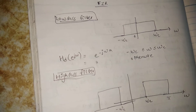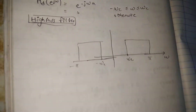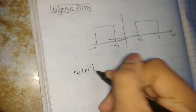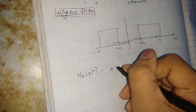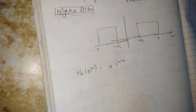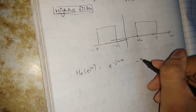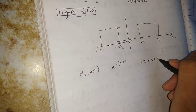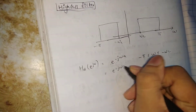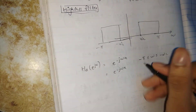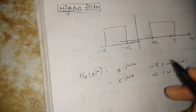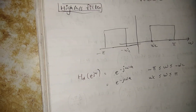This is omega C, so this is minus omega C. For the high pass filter, HD of e raised to j omega equals e raised to minus j omega alpha. The range is between minus pi less than or equal to omega less than or equal to minus omega C, and also e raised to minus j omega alpha where omega C is less than omega less than or equal to pi.